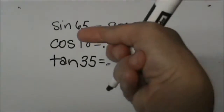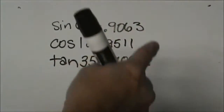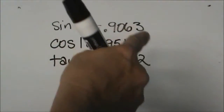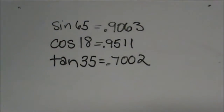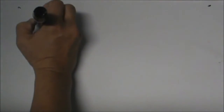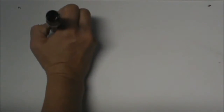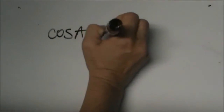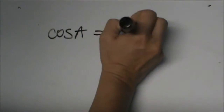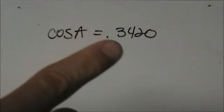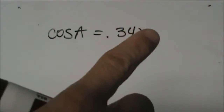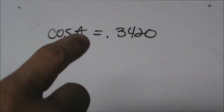Now we're going to do a backwards problem. The reason it's backwards is I'm going to give you a ratio and you have to figure out the angle measure. We're going to take the inverse cosine. I have the decimal 0.3420 and I need to figure out what angle gives me that ratio.